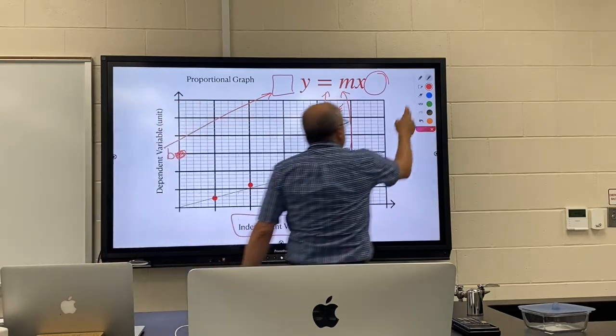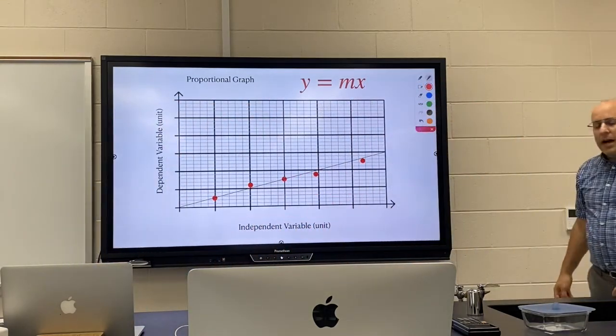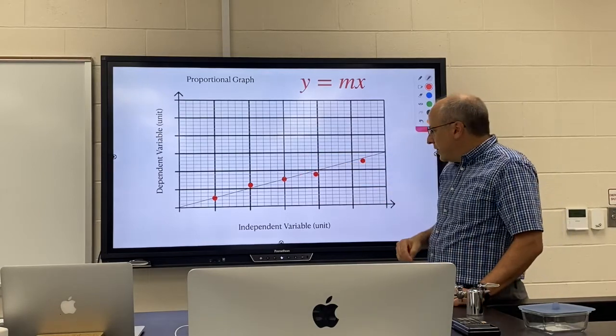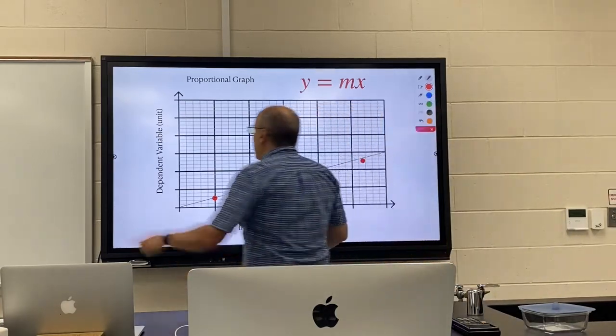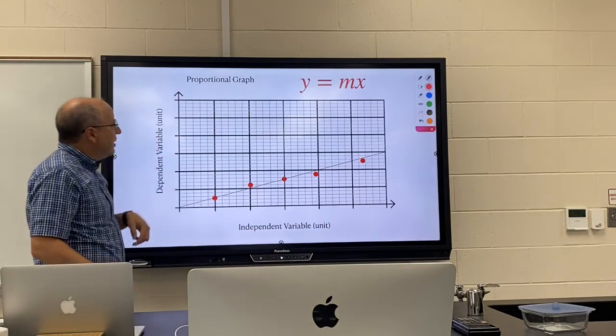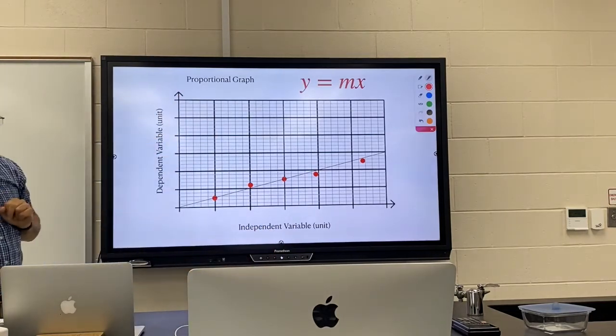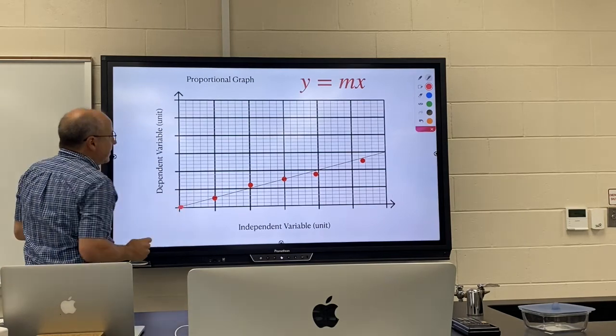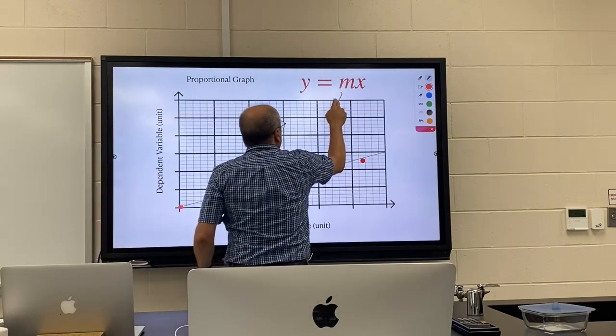Sometimes you have—in fact, this is a very common graph—sometimes you have a linear graph that actually goes through the origin, and then it's not called linear anymore. You call it proportional, and it's just y equals mx. The y-intercept is zero, so it is not needed. So you have your slope and your y and your x value.